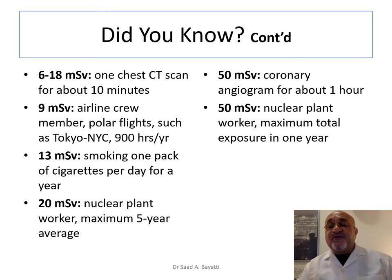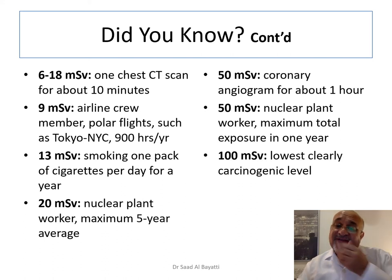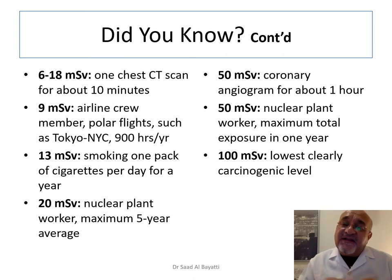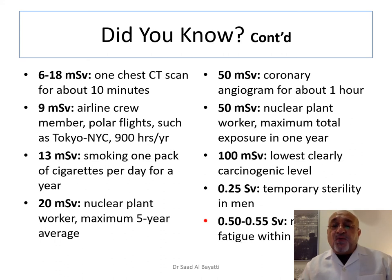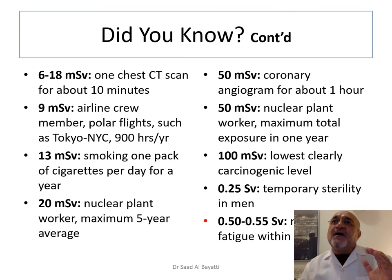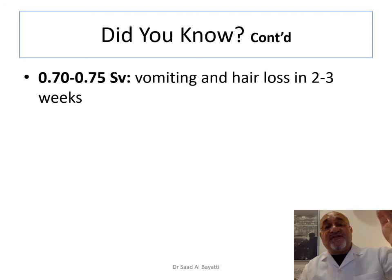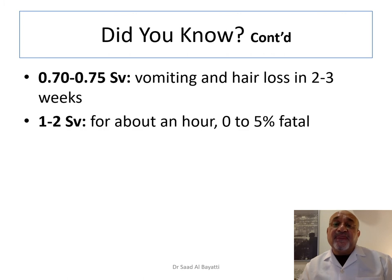The nuclear plant worker's maximum total exposure in one year is 50 millisieverts. Regarding real biological effects: the dose that begins to cause carcinogenic effects in living tissues is estimated to be 100 millisieverts as a single dose. Temporary sterility in men results from a single dose of 0.25 Sieverts. If the subject receives 0.5 to 0.55 Sieverts, hair loss and fatigue will result. If the dose is higher — around 0.7 to 0.75 Sieverts as a single dose — hair loss occurs within 2 to 3 weeks.